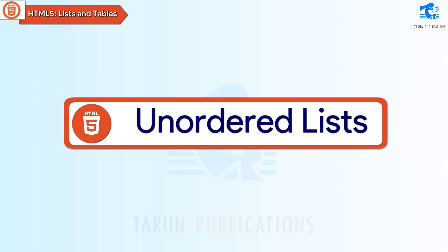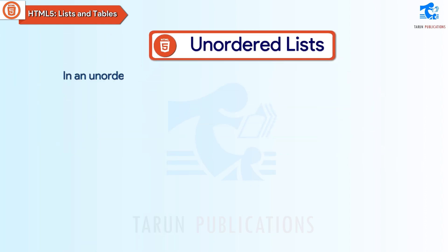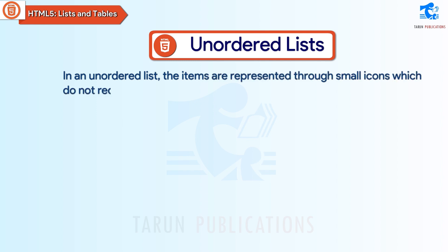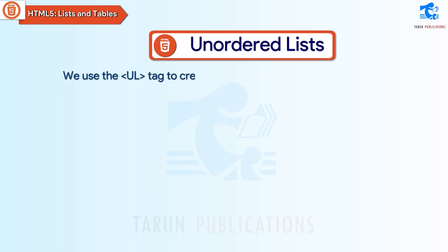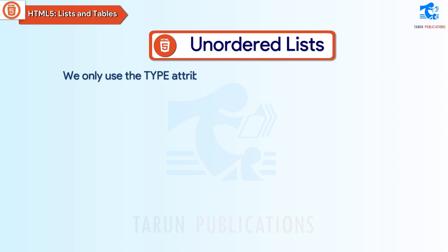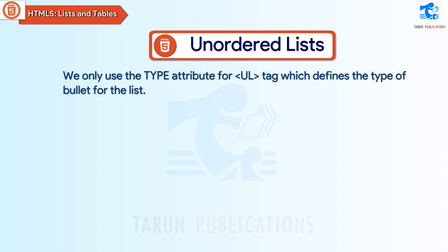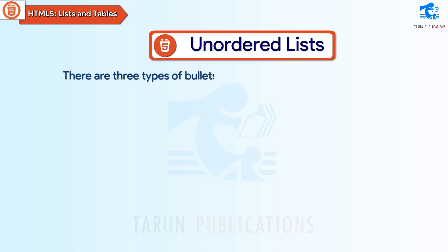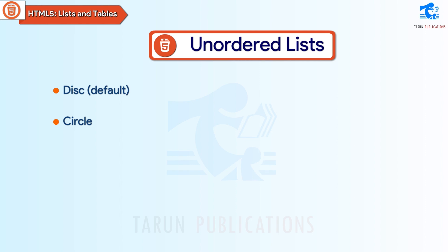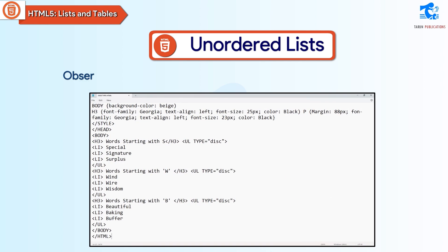Unordered Lists. In an unordered list, the items are represented through small icons which do not require any particular sequence. We use the ul tag to create an unordered list in HTML. We only use the type attribute for the ul tag, which defines the type of bullet for the list. There are three types of bullets in HTML: Disk (default), Circle, and Square.